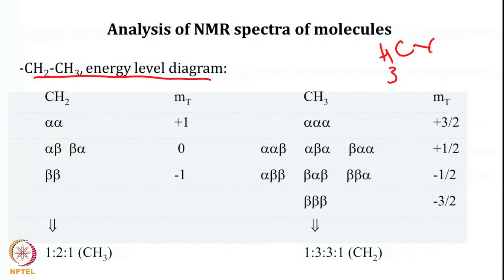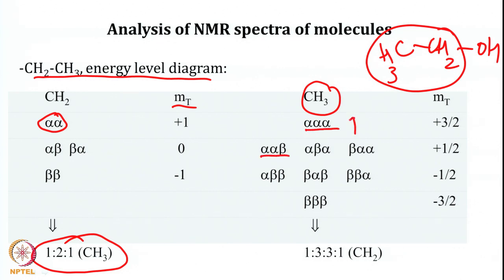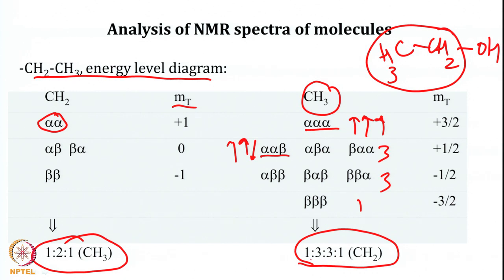Looking at the energy level diagram for the ethyl alcohol molecule, considering CH3 and CH2: CH2 can be in the alpha-alpha, alpha-beta, beta-alpha, or beta-beta states, causing splitting of CH3. CH3 can be in alpha-alpha-alpha, alpha-alpha-beta states, etc., giving three types of orientation, which is why CH3 splits CH2 in the ratio 1:3:3:1.